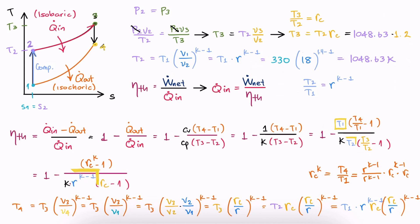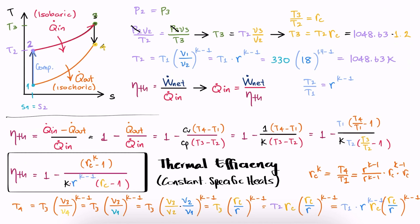By substituting T1 over T2, T3 over T2, and T4 over T1, we find an expression for the efficiency of the cycle as a function of K and the volume ratios. This right here is the derivation of the thermal efficiency of a diesel cycle when assuming constant specific heats.